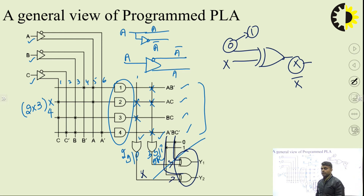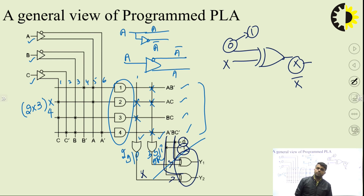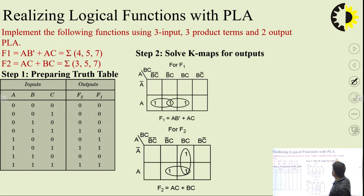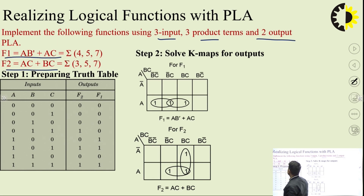If I need the true output X, I set the XOR control input to 0. If I need the complemented output X', I set the XOR control input to 1. Now let us solve a PLA design question: implement the following functions using a 3-input, 3-product-term, 2-output PLA. F1 and F2 are given as sum-of-minterms expressions.